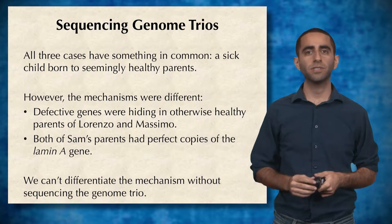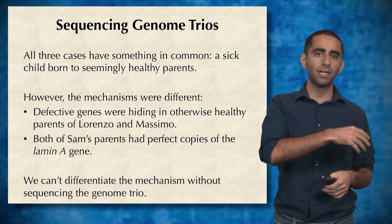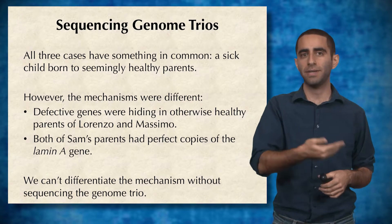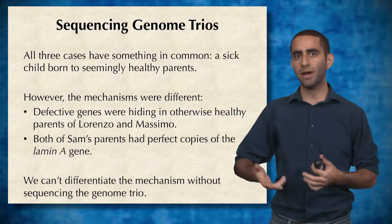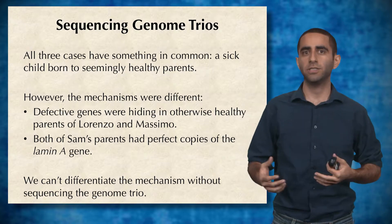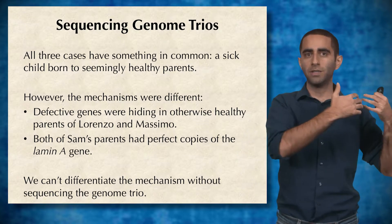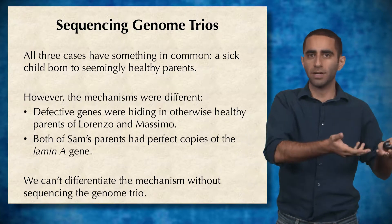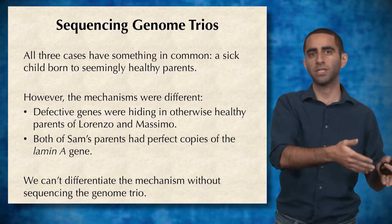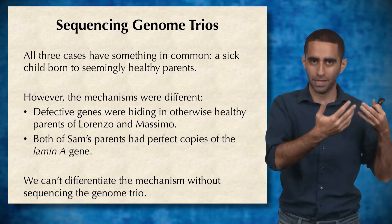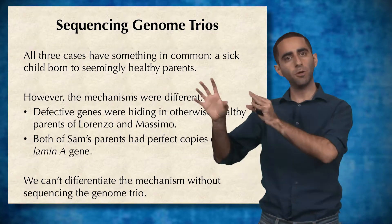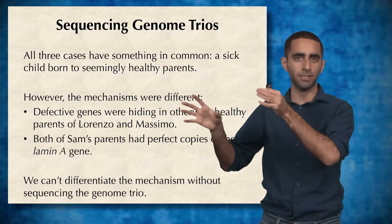However, in the case of Sam, both parents actually had perfect copies of this Lamin A gene, but Sam somehow had a mutated copy. So the distinction is two parents having broken copies that are recessive and passing down this broken recessive copy each, resulting in a child that has the disease,